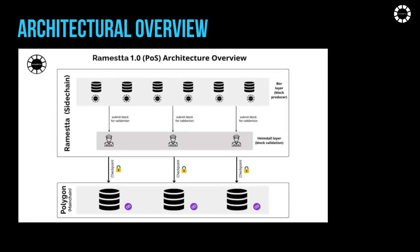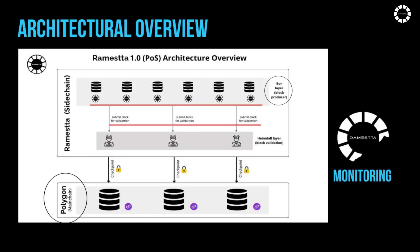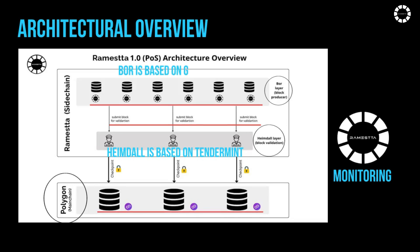The Romesta network is broadly divided into three layers: the Polygon layer — a set of contracts on the Polygon mainnet; the Heimdall layer — a set of proof-of-stake Heimdall nodes running in parallel to the Polygon mainnet, monitoring staking contracts and committing Romesta network checkpoints to the Polygon mainnet (Heimdall is based on Tendermint); and the Bohr layer — a set of block-producing Bohr nodes shuffled by Heimdall nodes (Bohr is based on GoEthereum).